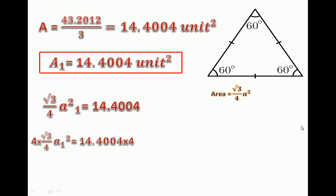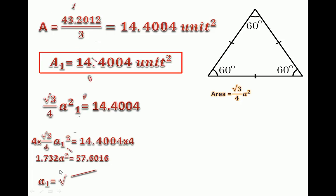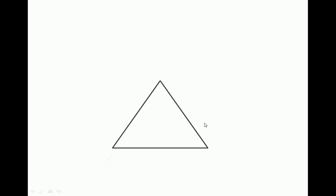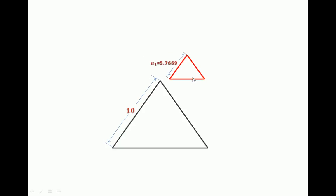To solve for a1, we multiply both sides by 4 and divide by √3. This gives us the a1 value, which is 5.76669. This is the side length of the first small triangle.